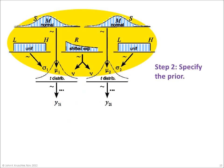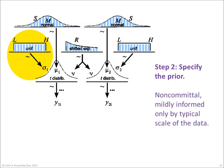The second step in Bayesian analysis is to specify the prior credibilities of the possible parameter values. The upper part of the diagram, highlighted in yellow, illustrates the prior distribution. For example, on the far left, the prior distribution on sigma1 is a uniform distribution spanning a range from an extremely low value, L, to an extremely high value, H.